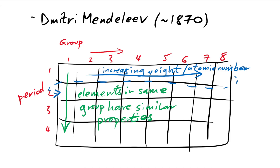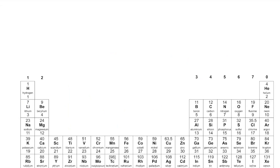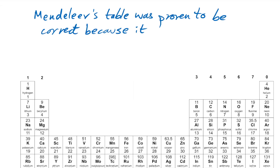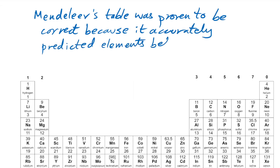Well, they still didn't know about electrons, protons, and neutrons at the time. But this, in essence, was pretty much everything they needed to start doing some proper chemistry — to predict how things would react, how they would act. Not only that, but to predict what elements could exist before they had actually discovered them. And lo and behold, they did predict elements that decades later were found, even if they had to be made artificially. Mendeleev's table was proven to be correct because it accurately predicted elements before they were discovered.